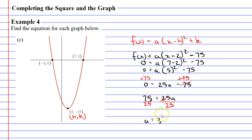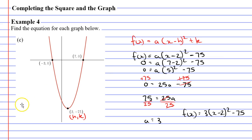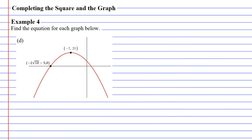Now all I need to do is take my A value and substitute it into my function. So f(x) equals 3 times (x minus 2) squared minus 75. Let's now move on to question D.